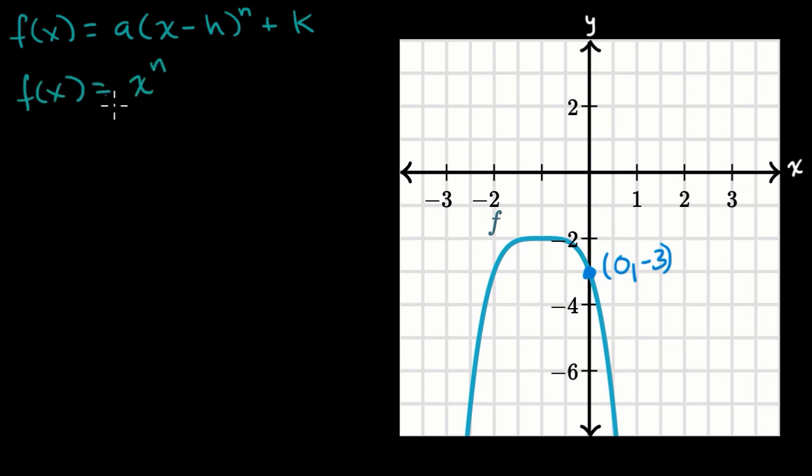If you shift it right or left by h, that changes this value. If you shift it up or down, that's what k determines. If you scale it, that's what a determines. So if you transform this by shifting left, right, up, down, or scaling it, you'd get something like f(x).